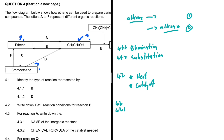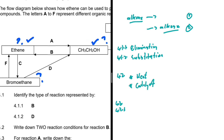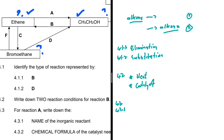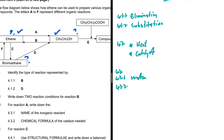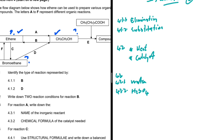For 4.3.1, write down the name of the inorganic reactant for reaction A. We are turning an alkene into an alcohol, so we need H₂O. Since H₂O does not contain carbon, it is inorganic. The name of the inorganic reactant is water. For 4.3.2, the chemical formula of the catalyst is H₂SO₄. Be careful not to write a formula when they want a name, or a name when they want a formula.